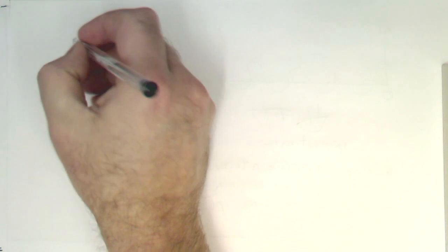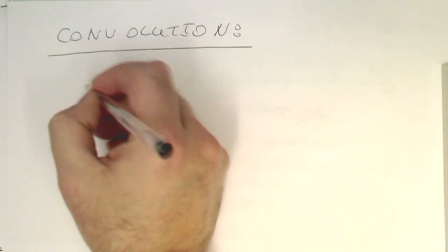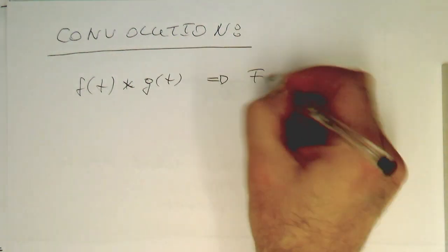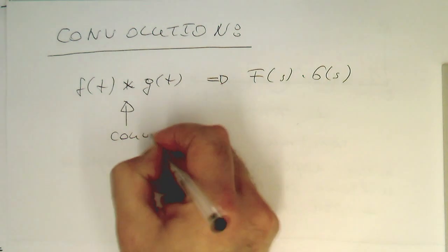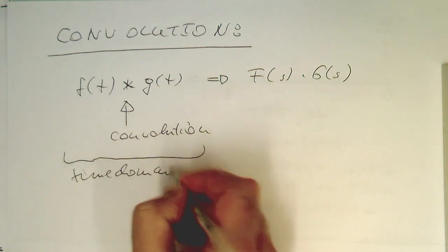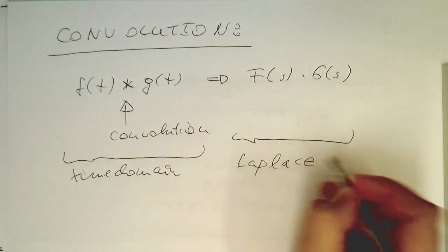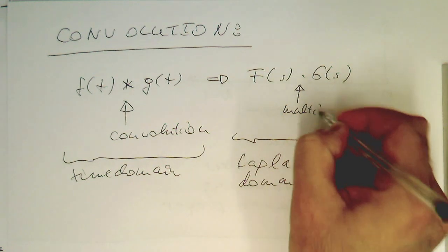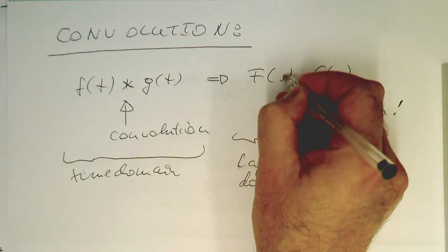So let's summarize the convolution. Convolution: if we have f of t convolved with g of t, then this turns into F of s multiplied by G of s. That's the convolution operation — in the time domain it's a convolution, and in the Laplace domain this turns into a multiplication. That's a very important property and you should keep this in mind.